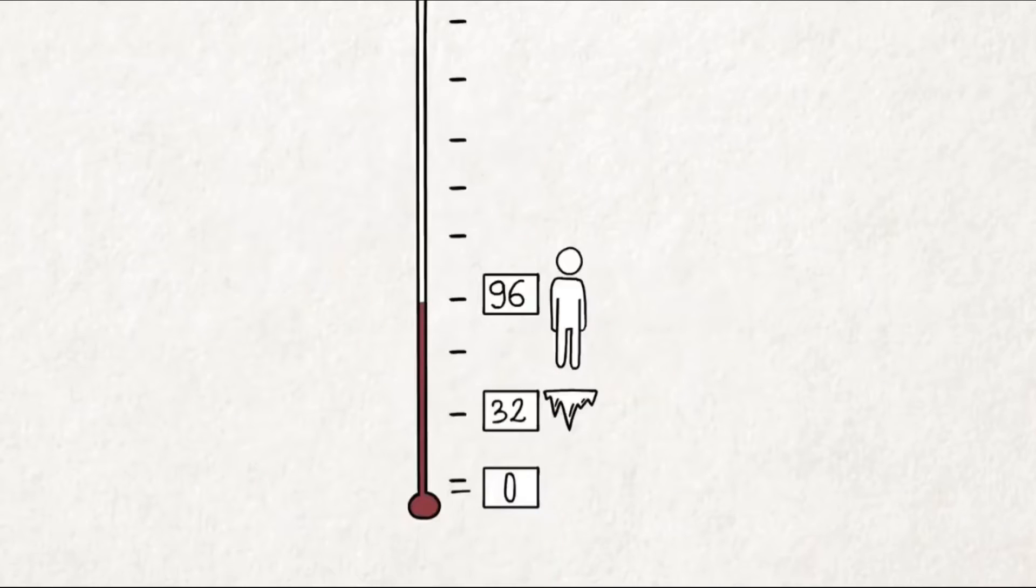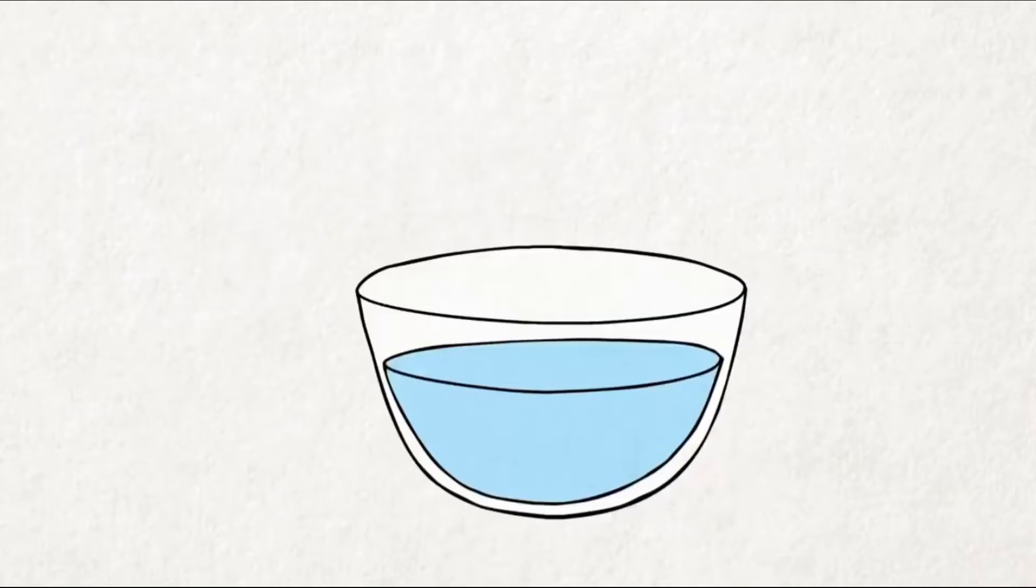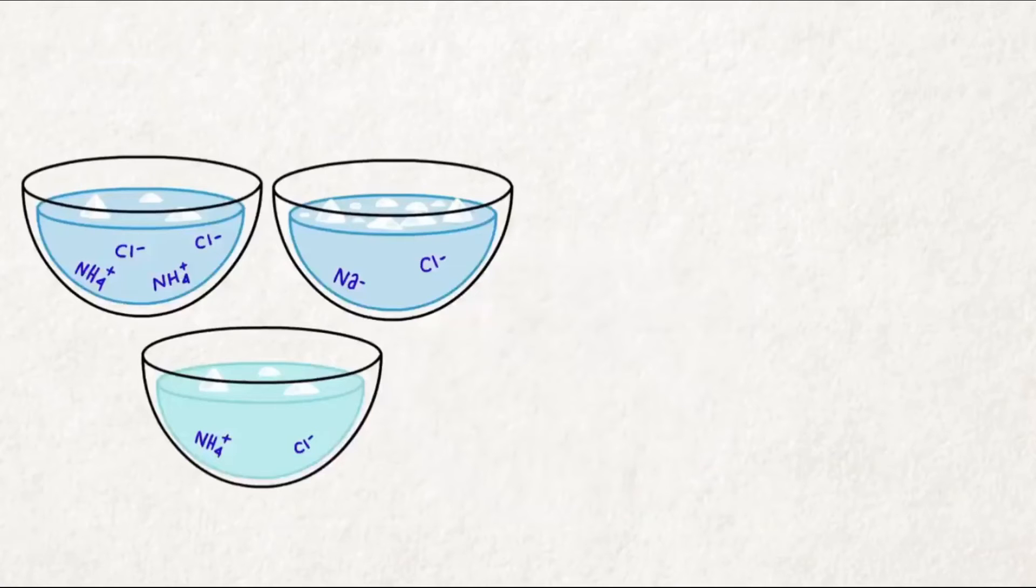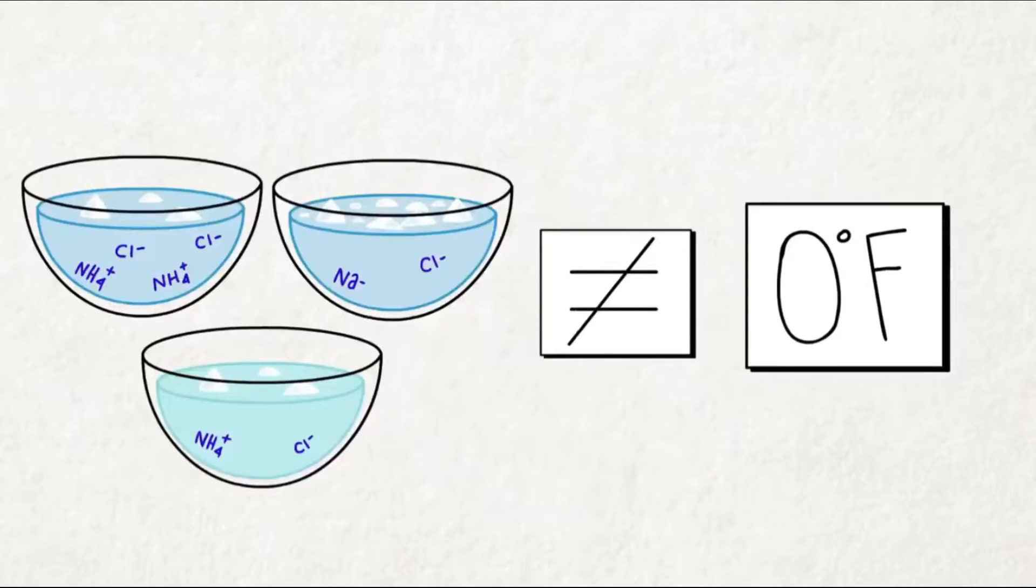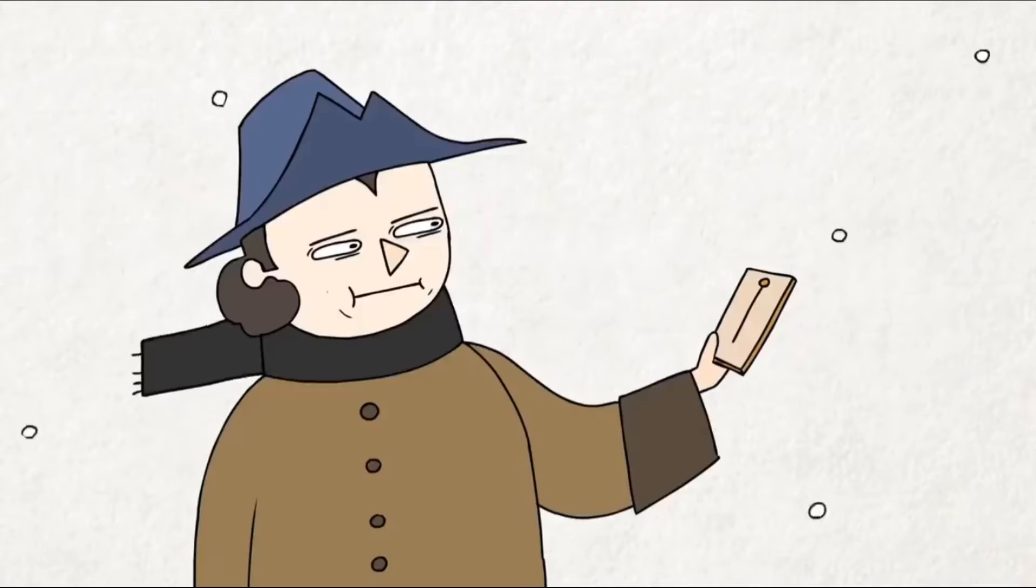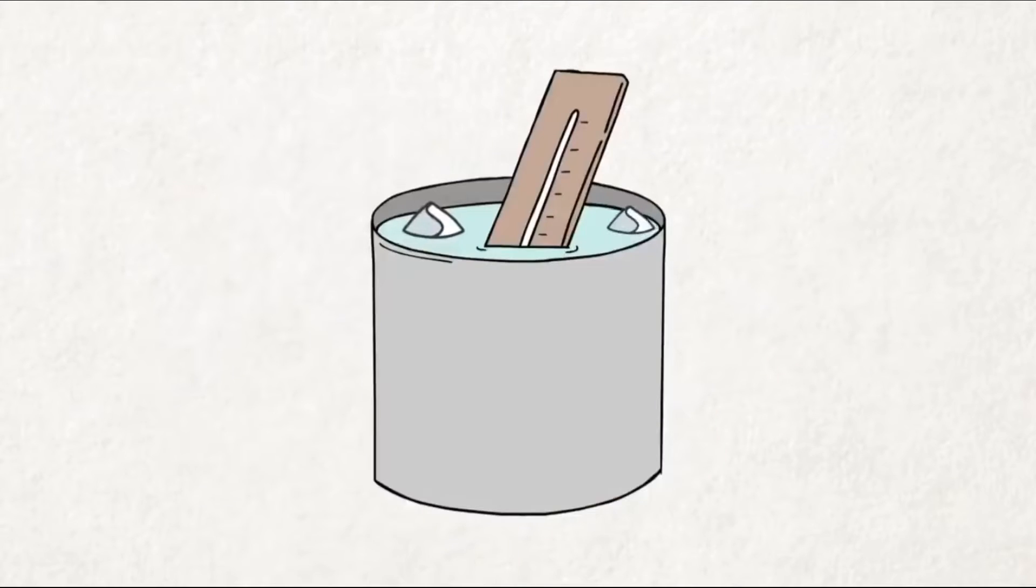So, what exactly did zero represent on the scales of Fahrenheit and Romer? By many accounts, it's the temperature of a salt, ice, and water mixture. The only problem is, there are different descriptions of these mixtures, and none of them actually produces the temperature they're supposed to. More likely, I think, they picked the coldest temperature in winter, set that as zero, and later used ice and brine to calibrate new thermometers.